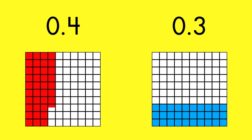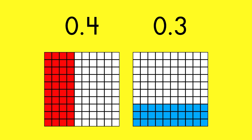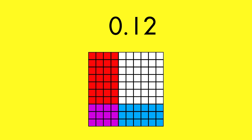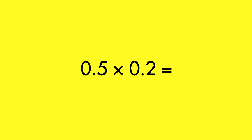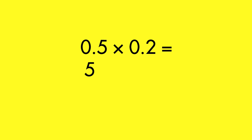A decimal is a part of a whole. When you multiply one part of a whole by another part of a whole, the product is even smaller than the factors. In this model, tenths times tenths equals hundredths. When you multiply numbers with decimals, ignore the decimal points at first. Five times two equals ten.